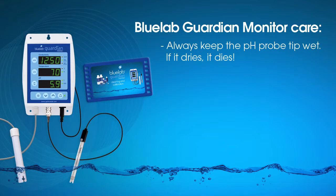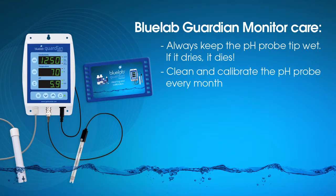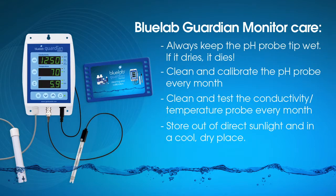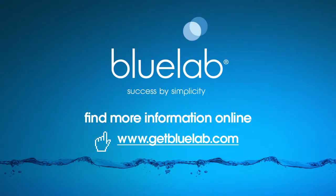These care steps will help maximize the life of your monitor and equipment. Keep the pH probe tip wet — if it dries, it dies. Follow the full cleaning procedure for both probes each month to ensure accuracy. You can watch the Bluelab Guardian Monitor cleaning and calibration video online. Keep the monitor positioned in a cool, dry, clean place away from direct sunlight. For more information about Bluelab products, visit www.getbluelab.com.